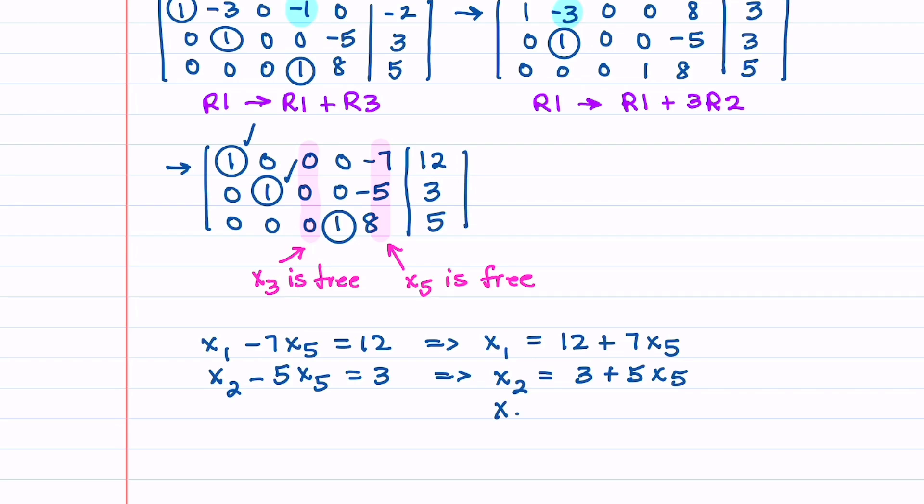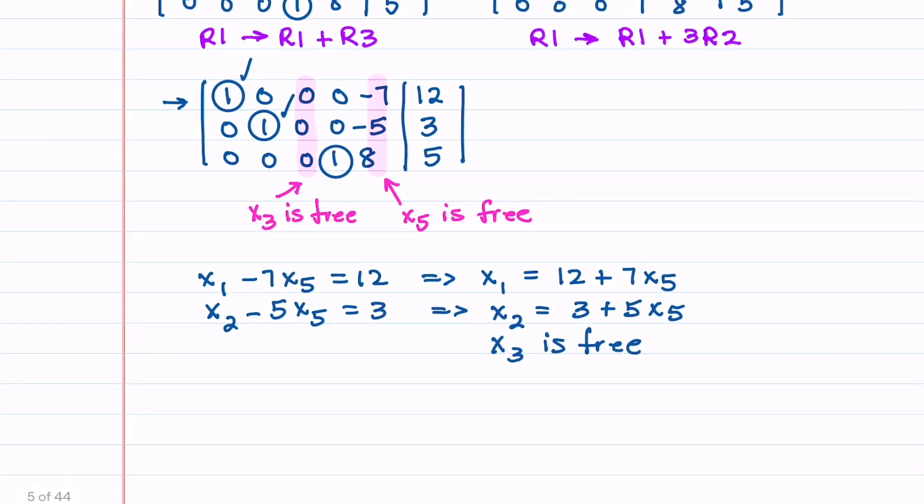Let's go ahead and write down that x3 is free. That way everything will be in order. Now we can solve for x4. So that is going along our last row. So we have an x4 plus 8x5 is equal to 5. So that tells us that x4 is 5 minus 8x5. And then lastly, we're going to write down that x5 is free.